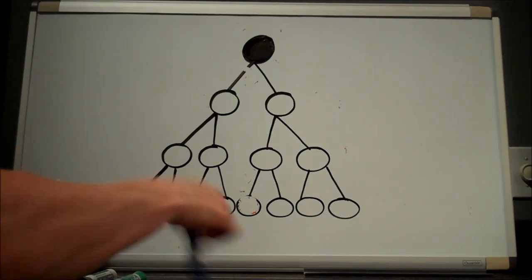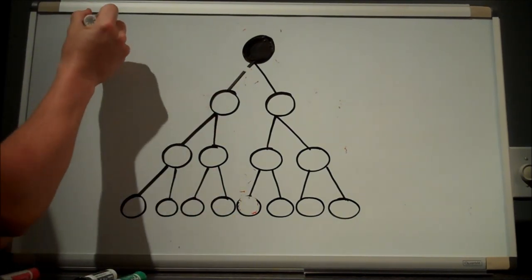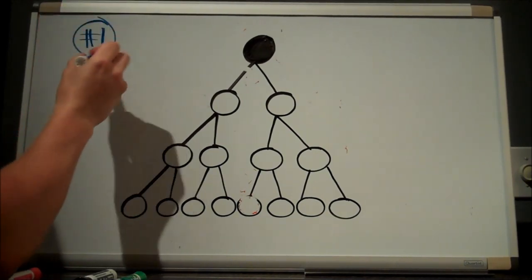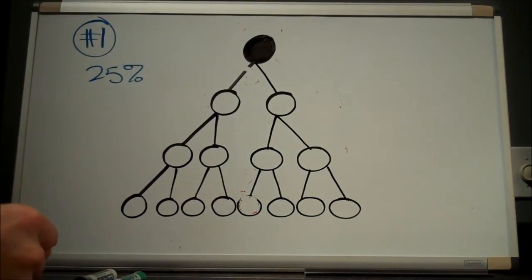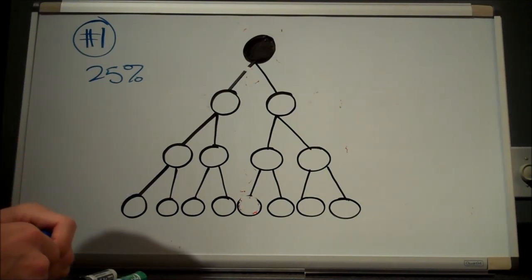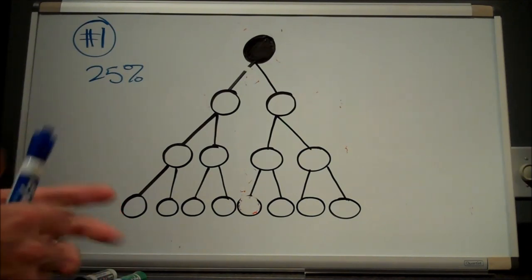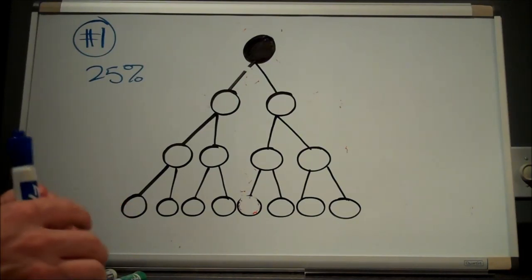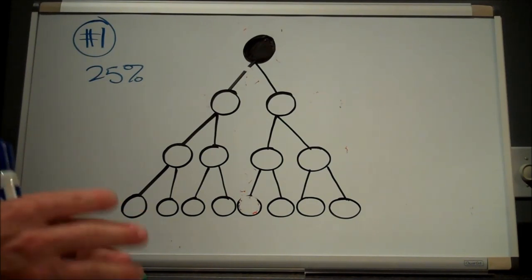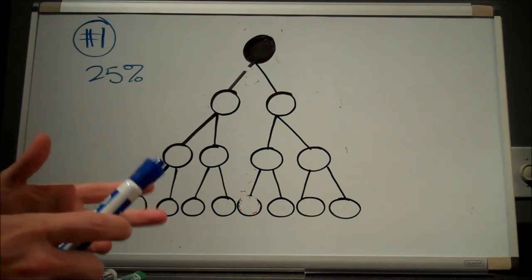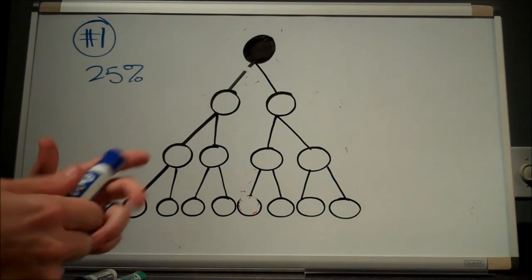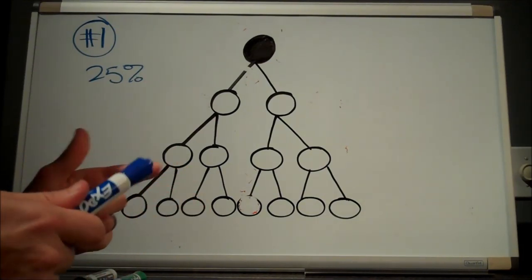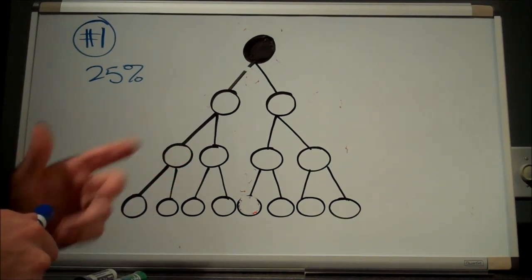Very simple. Two ways. Number one, Beachbody coaches earn a 25% commission on all products that they sell when they refer people through their website. When you sign up as a coach, Beachbody creates a website for you to send people to where they can make you their free coach. Once those people make you their free coach, they're permanently linked to you as a coach. Whenever they order something through teambeachbody.com, they'll log into their account and you will get the credit for that order and you will receive a 25% commission. If you sell P90X, which is $120, you would get a $30 commission for that. So, 25%. Very simple.